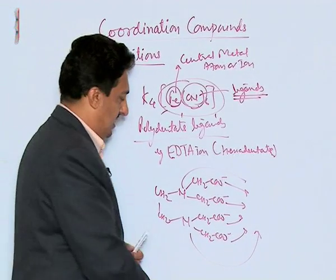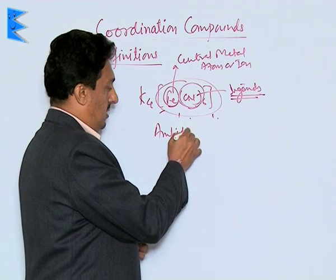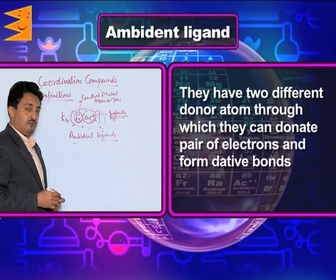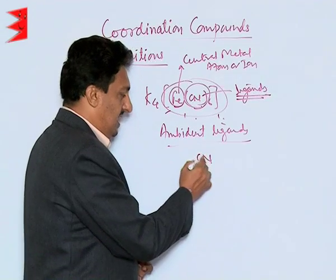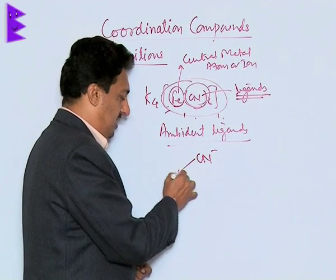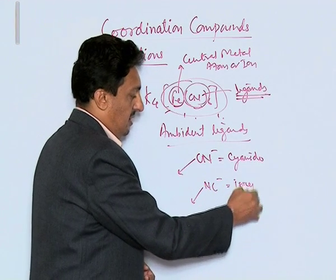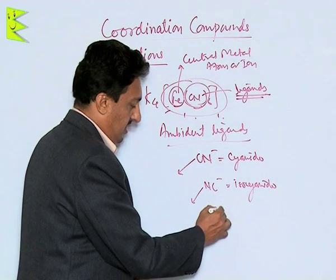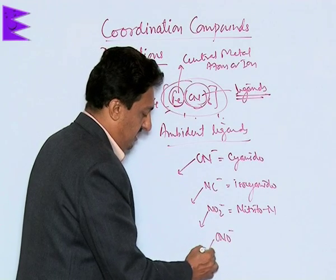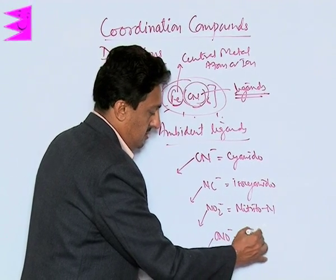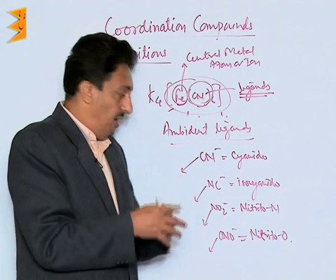We can also have ligands which are very special, called ambidentate ligands. Ambidentate ligands are those which have two different donor atoms through which they can donate a pair of electrons and form a dative bond. For example, cyanide: if it donates through carbon, we call it cyanido; if through nitrogen, it is isocyanido. Similarly, NO₂⁻: if it donates through nitrogen it is nitrito-N, and if through oxygen it is nitrito-O.